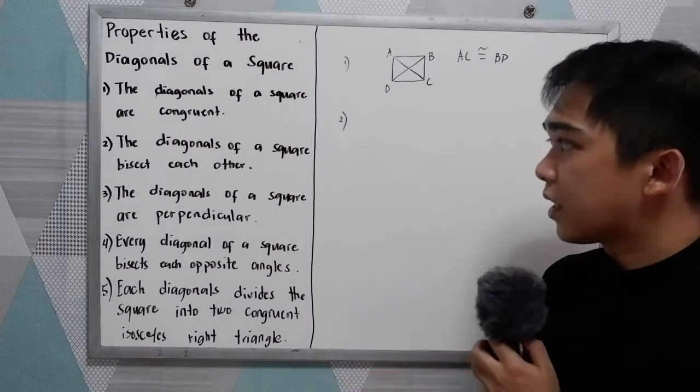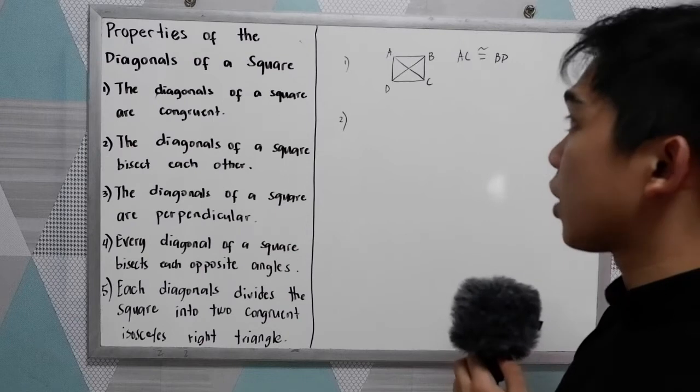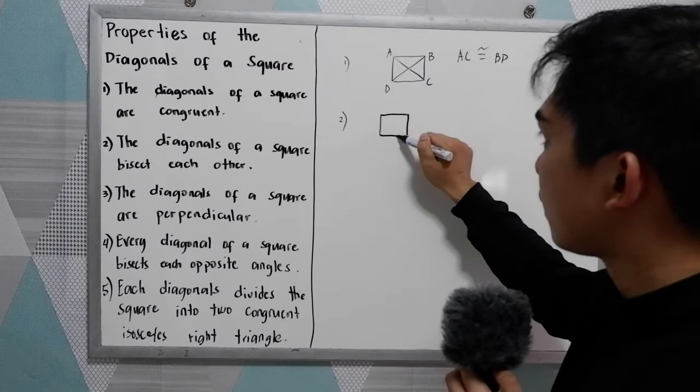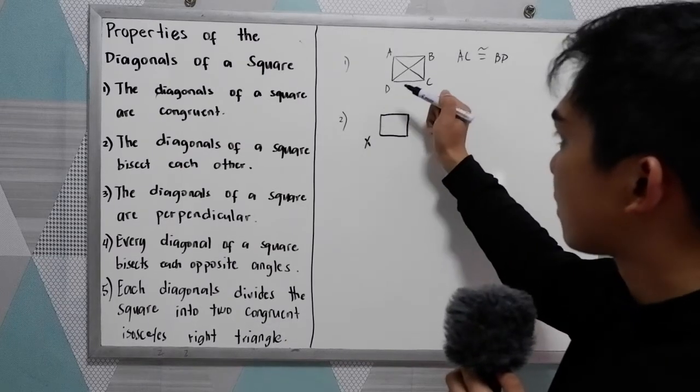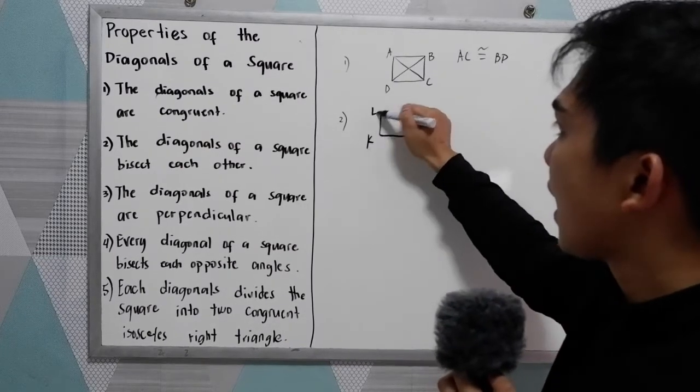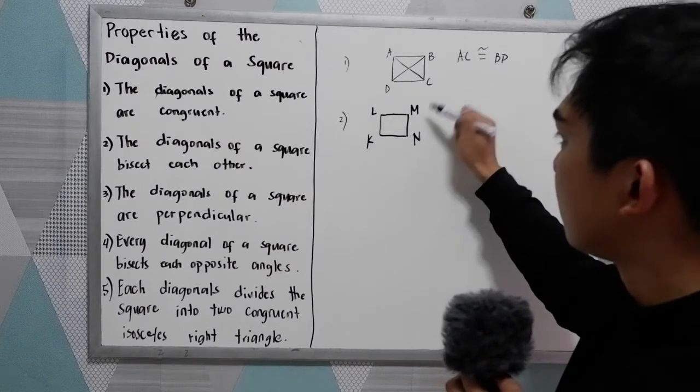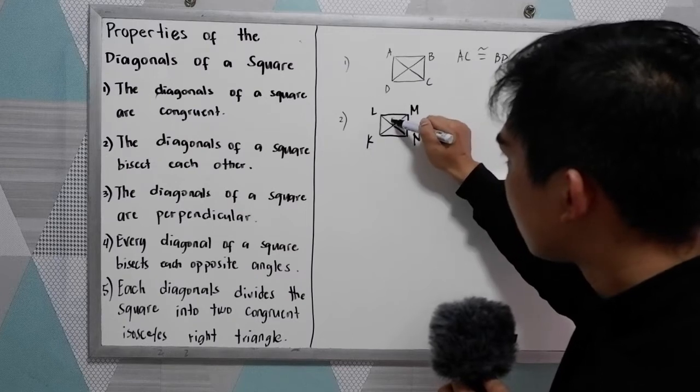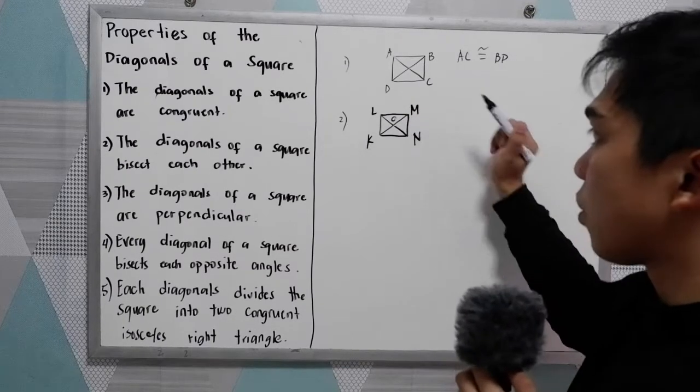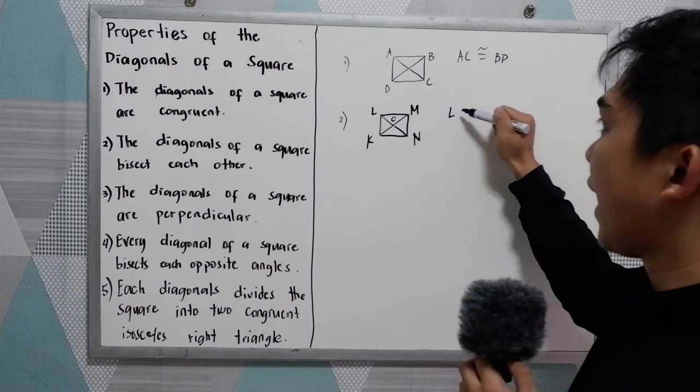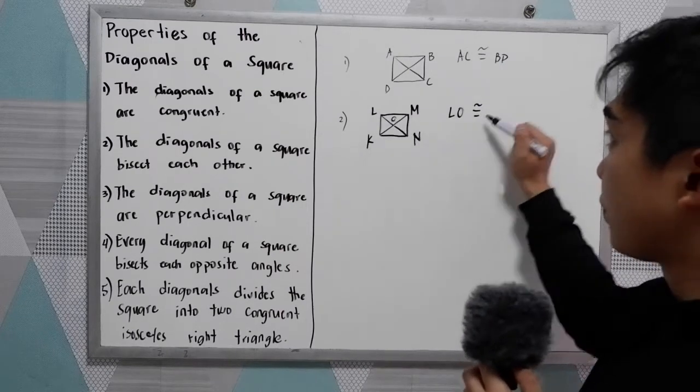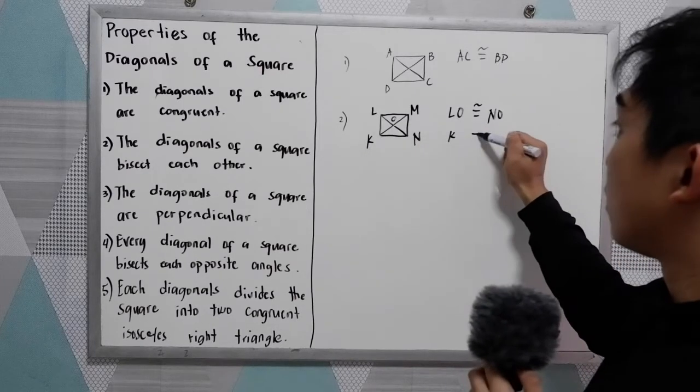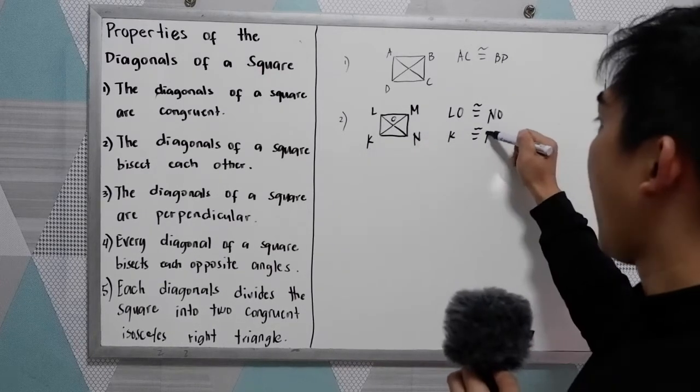Number two, the diagonals of a square bisect each other. Let's say we have our square K, L, M, N, then the diagonals and the intersection point is O. So that means we have LO is congruent to NO or KO is congruent to MO.